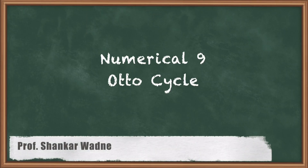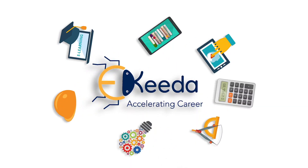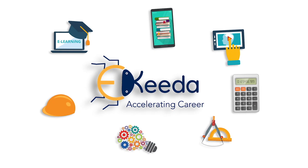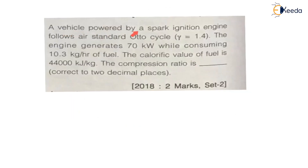Hello my dear students. In this lecture we are going to see one numerical on Otto cycle. This question was asked in GATE 2018 for two marks in set 2. The question is: a vehicle powered by a spark ignition engine — spark ignition engine means SI engine, and SI is nothing but Otto cycle. In the question they have given Otto cycle or Otto engine, spark ignition engine, which follows the standard Otto cycle.